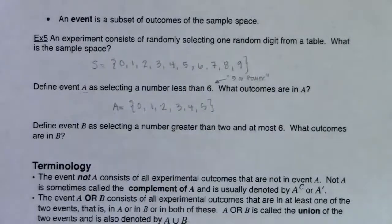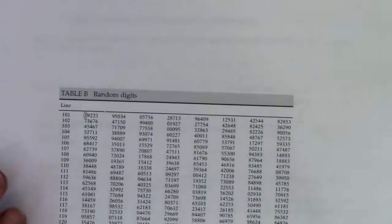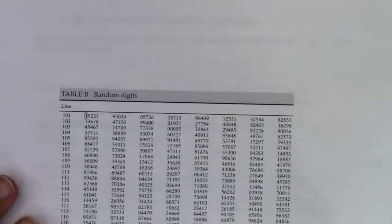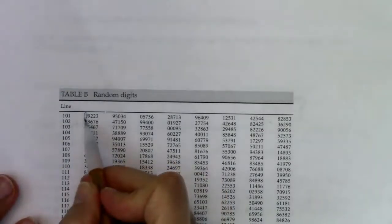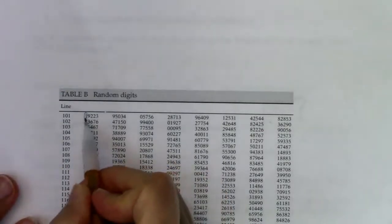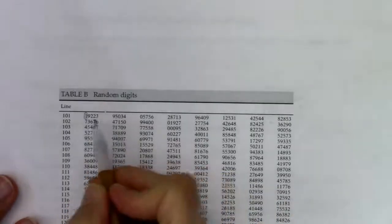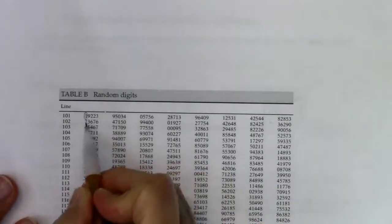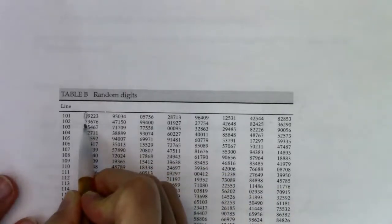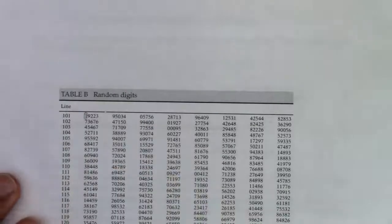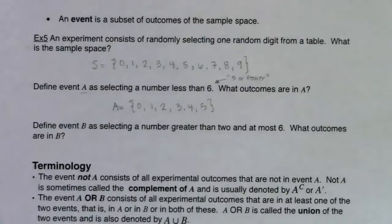Going back to line 101, if I pick one digit at a time and get the number one, that outcome is in event A because one is in event A. If I had started at line 102, the first digit would have been seven — that is not in event A. We just need to be able to answer: is it in there or not?